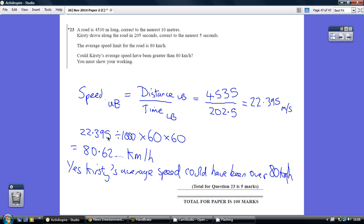First of all, to get from metres to kilometres, we divide by 1,000. And then secondly, to get from seconds to hours, we times by 60 to get it to minutes, and by 60 again to get it into hours. Pop that into your calculator, and you get 80.62 kilometres per hour.